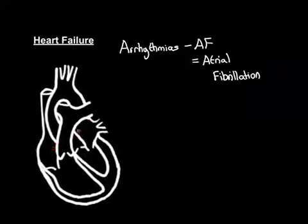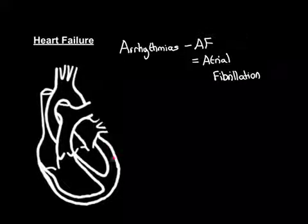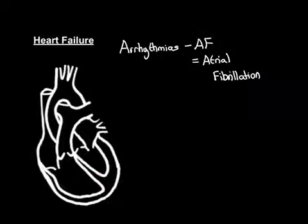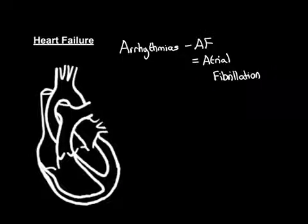In atrial fibrillation, the atria just shudder all the time — fibrillating rather than actually contracting and relaxing. The ventricles can develop this problem as well; that's called ventricular fibrillation, and if that happens it is a cardiac arrest — your heart stops beating because you lose all cardiac output. However, the atria can fibrillate for years and years, and as long as the ventricles are still relaxing and contracting, you can live on with that.